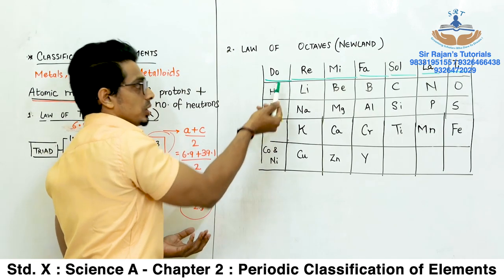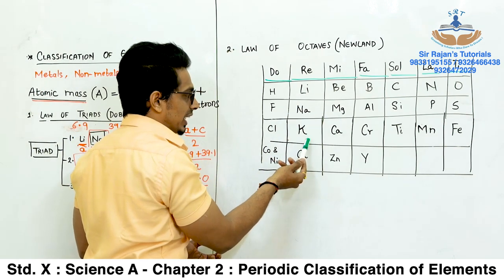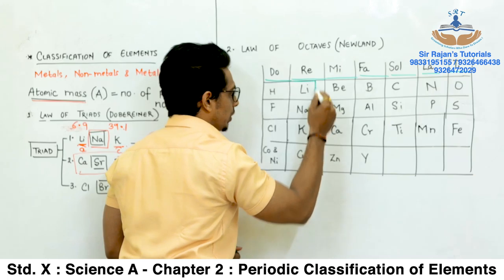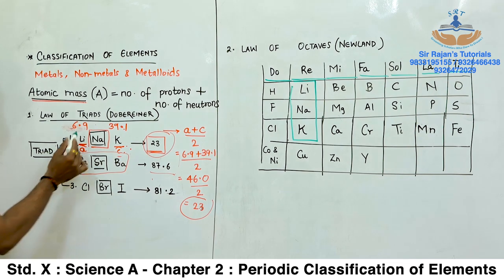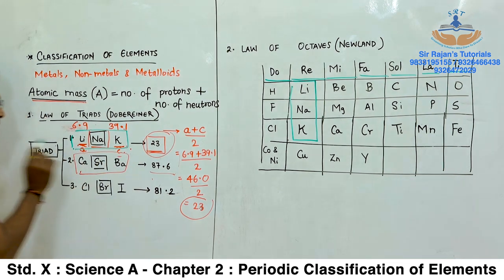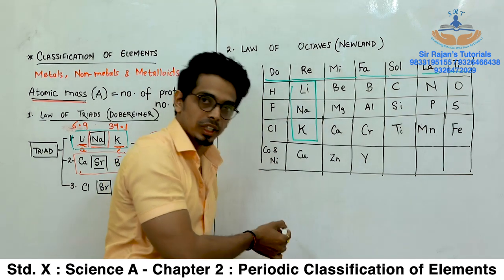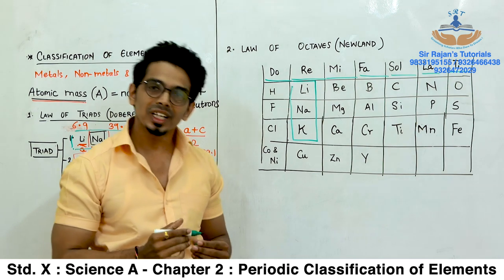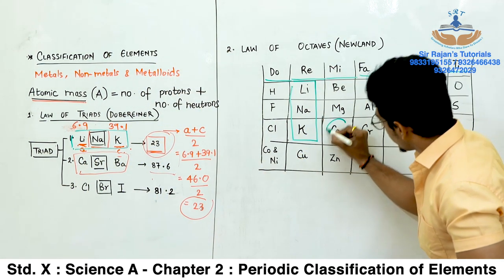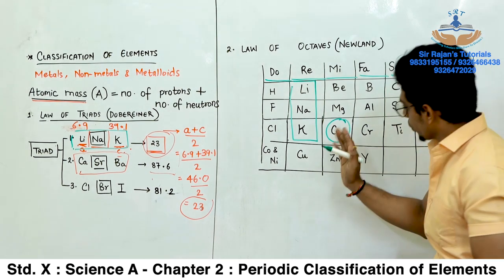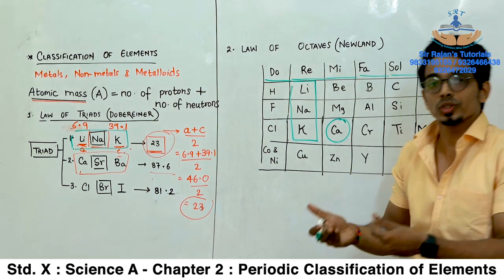Now we talk about Mendeleev's periodic law. Around 1869 to 1872, science made great progress in finding 63 known elements. This Russian chemist was the first one to successfully classify all 63 elements. Not only that, he was the first person to keep some vacant spaces in his periodic table where unknown and undiscovered elements were supposed to be discovered later. For Mendeleev, the fundamental property was also atomic mass. He said the properties of the elements are completely dependent on atomic mass.